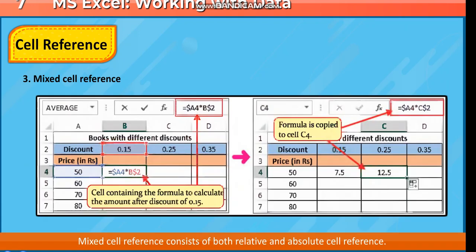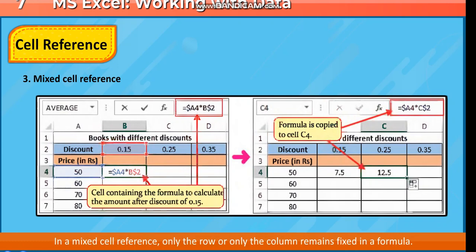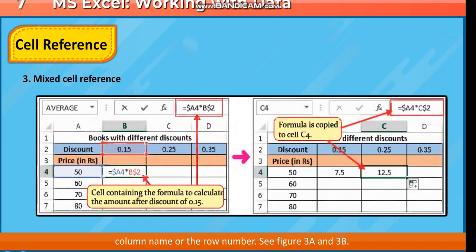Mixed cell reference consists of both relative and absolute cell reference. Excel adjusts the relative part of the reference while the absolute part is not adjusted. In a mixed cell reference, only the row or only the column remains fixed in a formula. To make a mixed reference, add a dollar sign in front of only the column name or the row number. See figure 3a and 3b.